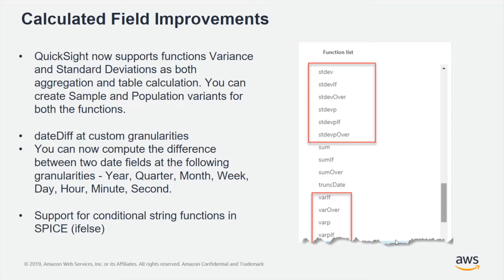The next function is dateDiff. dateDiff has always existed, but the return value was always measured in days. If you wanted to measure dateDiff in weeks or years, you had to do extra math to convert it. Now you can specify exactly how you want the dateDiff measured — in years, quarters, all the way down to the second level — making it much easier and more powerful.